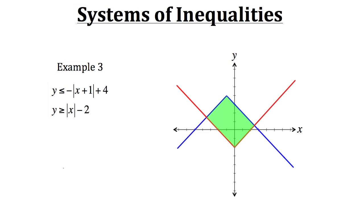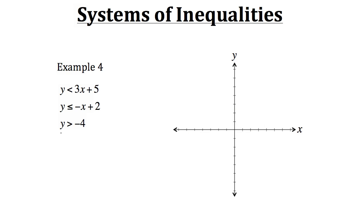Now let's take a look at one more example concerning systems of inequalities. For our last example, example 4, you may notice that we have three inequalities. This is fine because a system only needs at least two inequalities — we can actually have as many as we want: three, four, however many. For this example, we'll look at how to graph more than two.